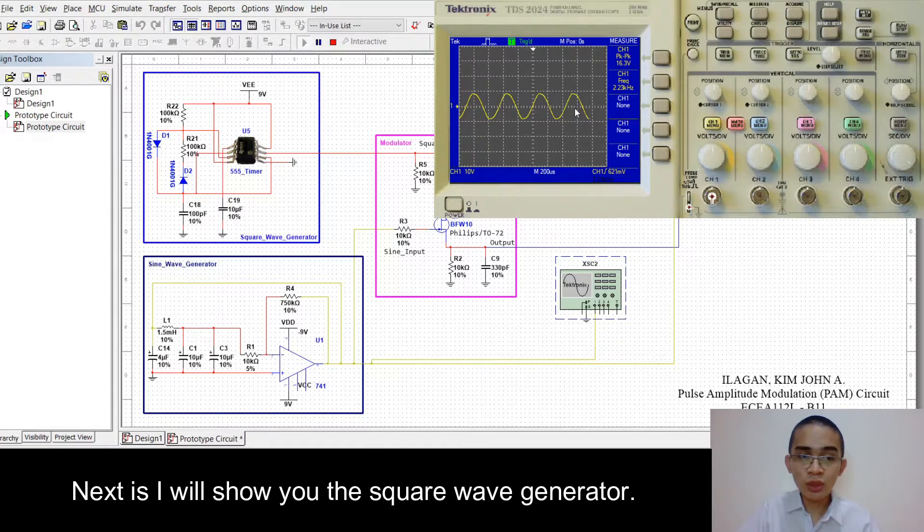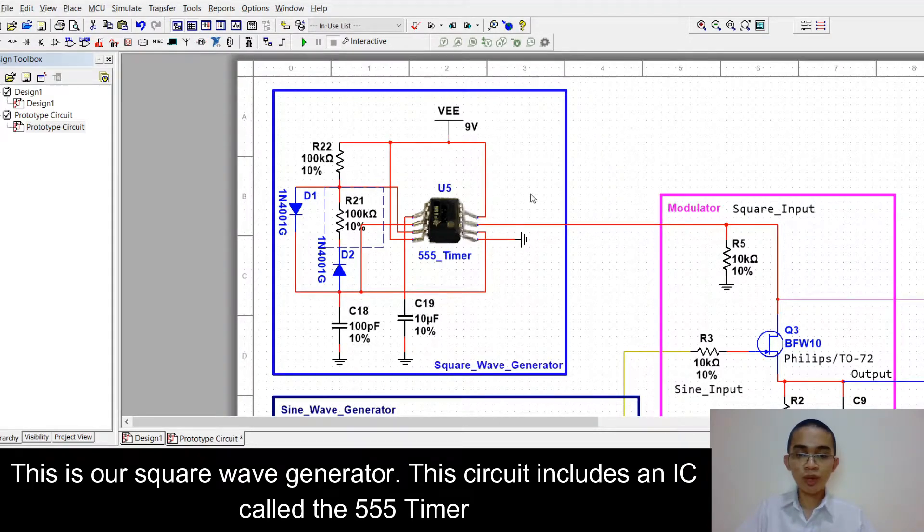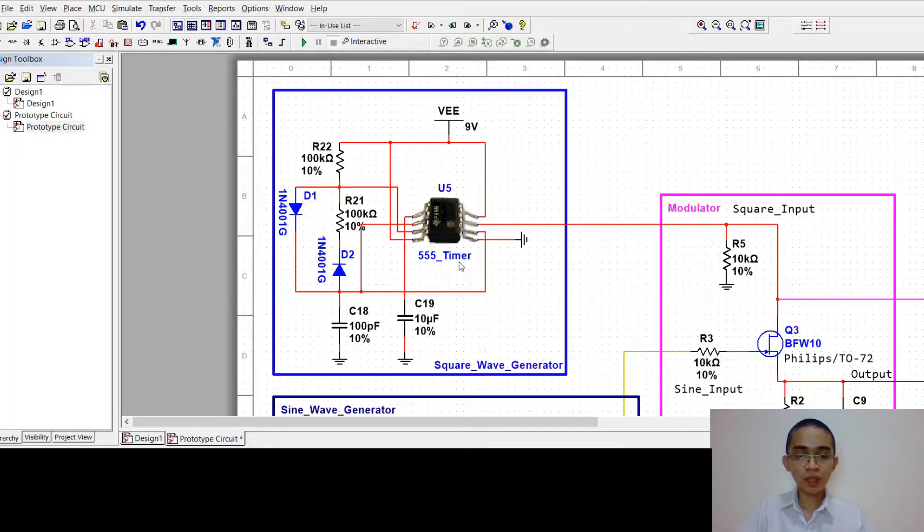Next, I will show you the square wave generator. This is our square wave generator. This circuit includes an IC called the 555 timer. This is a stable 555 oscillator circuit.